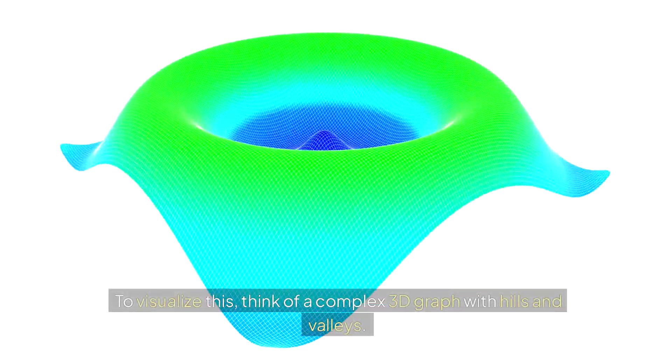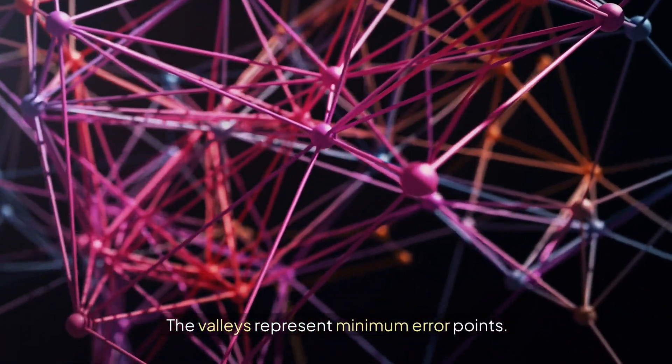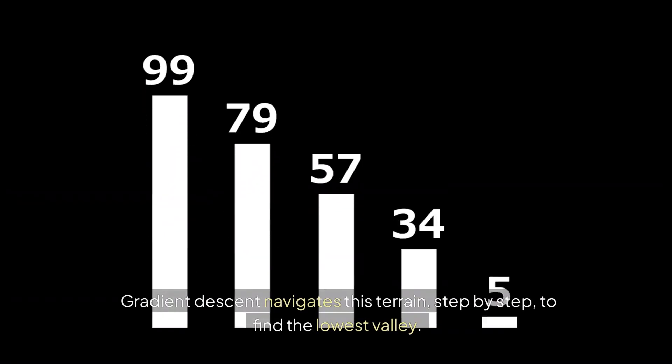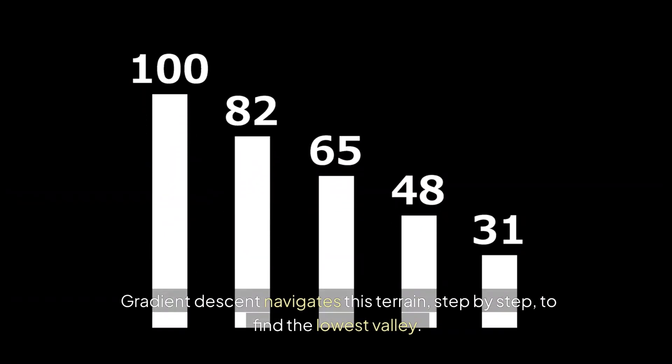To visualize this, think of a complex 3D graph with hills and valleys. The valleys represent minimum error points. Gradient descent navigates this terrain, step by step, to find the lowest valley.